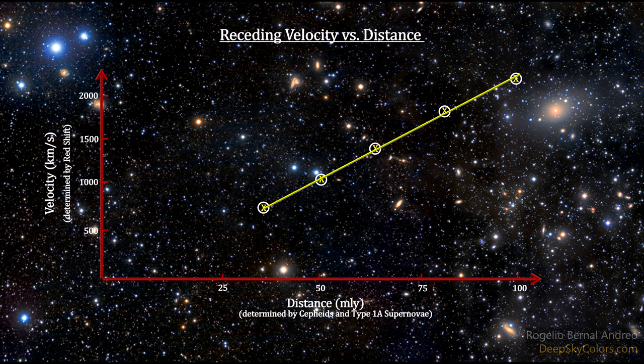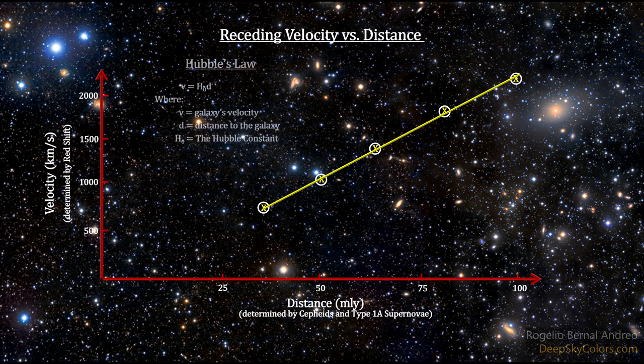And even more than that, he found that the relationship between velocity and distance is linear. The graph is a straight line. The equation is simple. The receding velocity of a galaxy is equal to the slope of the line, a constant, times the distance the galaxy is away from us.